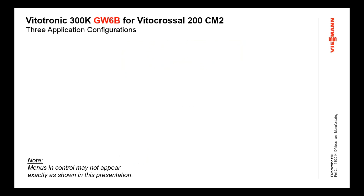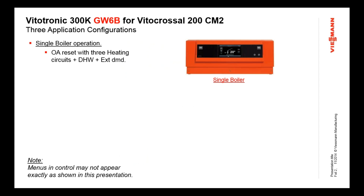The first control we look at is the GW6B, and it is a multi-function control. It is available to be configured as a single boiler control — so if you had a standalone CM2 boiler, this would be the configuration you would program it for. It can do everything that the standard traditional Viessmann boiler controls can do: auto-reset, up to three heating circuits, domestic hot water, external demand, billing automation interface — all those things.